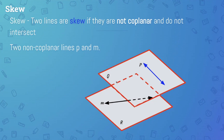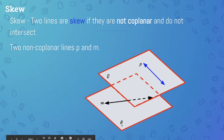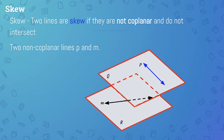Here's another way to visualize skew lines. We have two planes — in this case, I drew them as parallel planes. Yes, planes can be parallel. So up on top we have plane Q and underneath it we have plane R. On plane Q, we have the blue line P; on plane R, we have line M. Line P and line M do not intersect, but they are not parallel — they're non-coplanar. That's a perfect example of two lines, line P and line M, that are skew. This is a slightly easier way to visualize it.